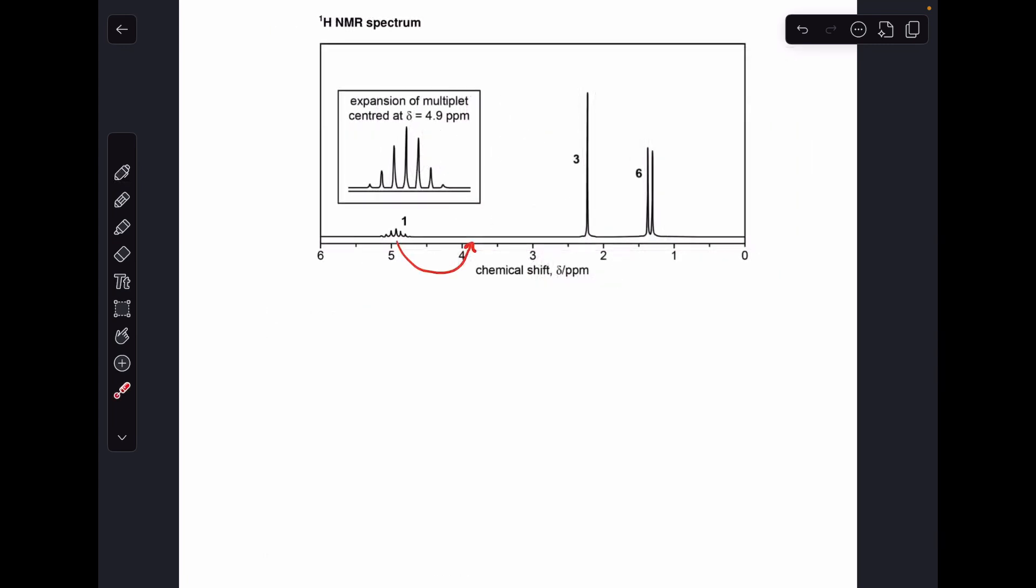Moving on to the proton NMR spectrum you'll notice I've got this red arrow here because it does say in the information that this signal here would normally be expected one ppm to the right. So when we look at the shift value we need to bear that in mind, rather than being at 4.9 we're going to class it as 3.9.